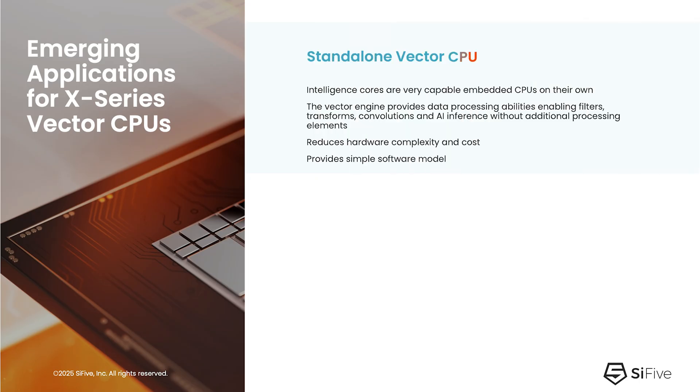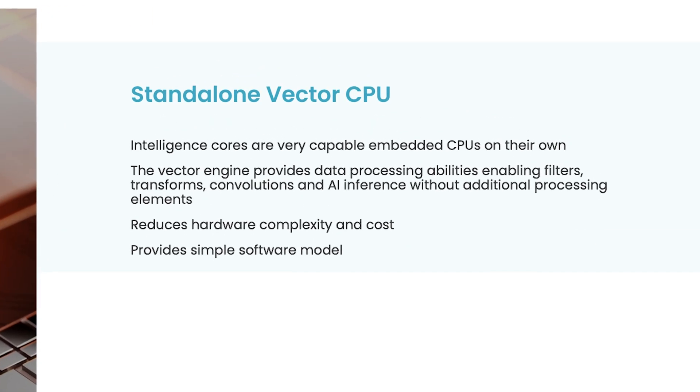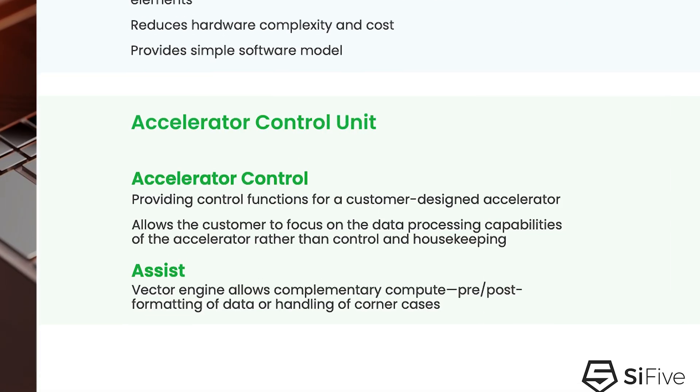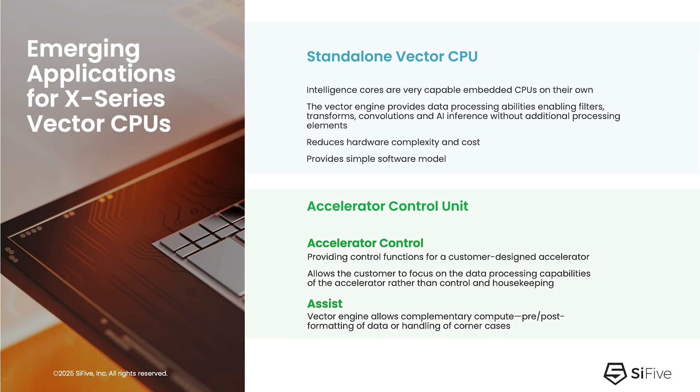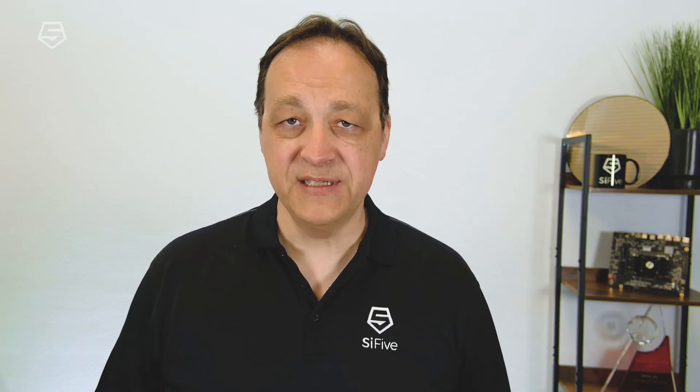As we engaged with customers on the previous generation intelligence family, we found there were two primary use cases. One was to provide a standalone edge AI vector processing capability, using the accelerated vector engine to provide the throughput needed for edge AI models. The other interesting use case was where the customer would use the intelligence core to connect to their own custom accelerator, where it would provide control and assist functions for that customer's own accelerator IP. This is one of the reasons we introduced the lowest-end member of the family, the X100 series — customers want a small, efficient core where most of the compute is actually done by an attached accelerator, but the X100 provides control and assist functions to simplify integration of that accelerator into the system-level SOC.